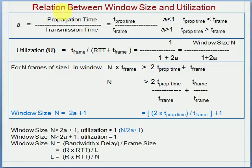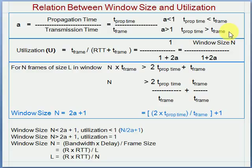We will understand the relation between window size and utilization. A is a constant giving us the ratio between propagation time and transmission time. If A is less than 1, utilization is close to 1 and throughput is close to the given bandwidth. But when A is greater than 1, it gives poor utilization as propagation time is more than frame time. The only solution is to use the sliding window protocol.